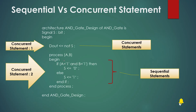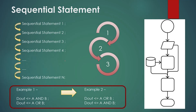First let's explore the difference between the execution style of concurrent statements and sequential statements. Sequential statements are very much similar to software language. These statements execute sequentially — that means at the start, statement 1 will execute, then statement 2 will execute, then statement 3 will execute and so on. This means that the sequential statements must be in the correct order, just like the flowcharts we have in software.